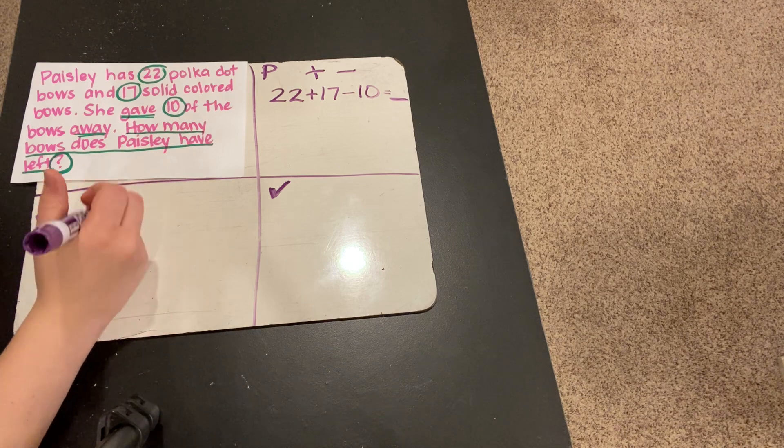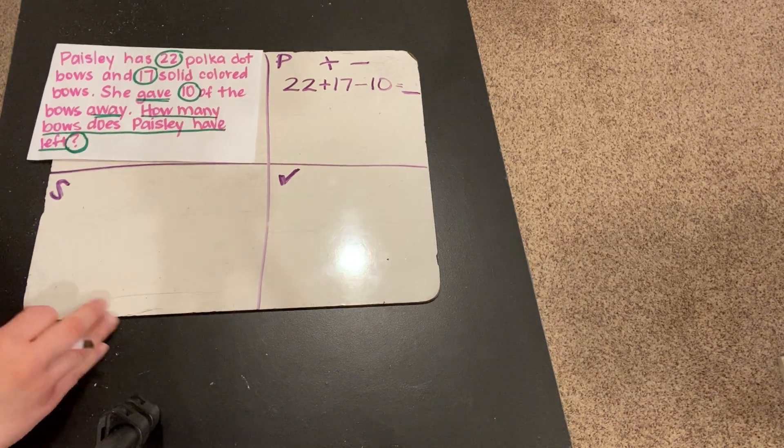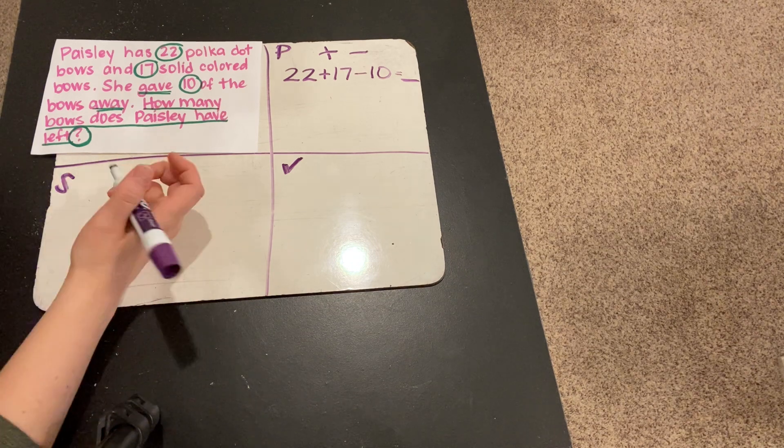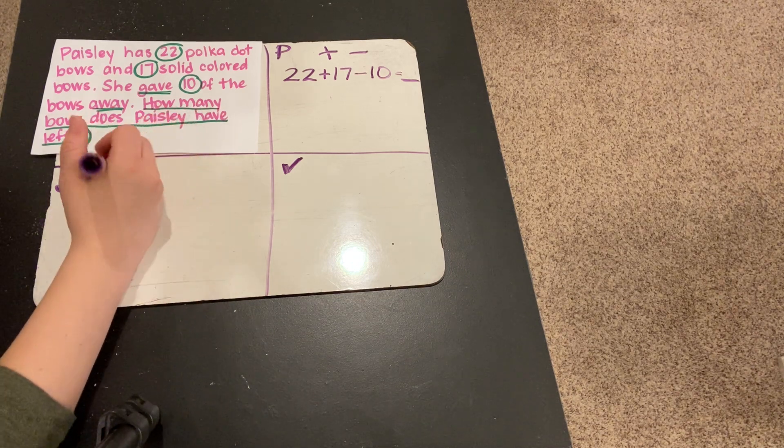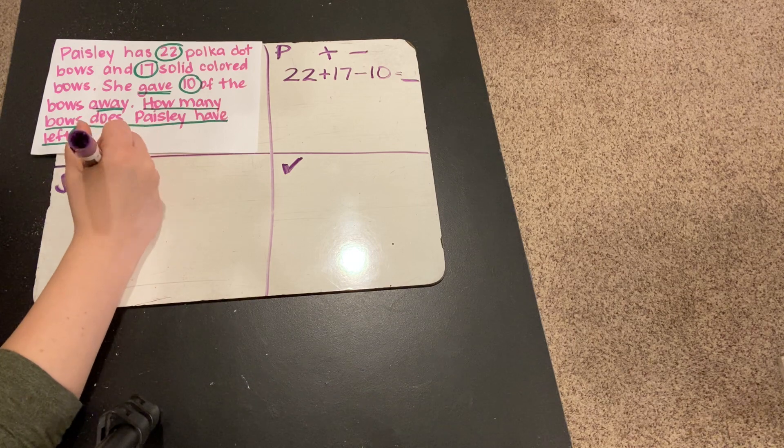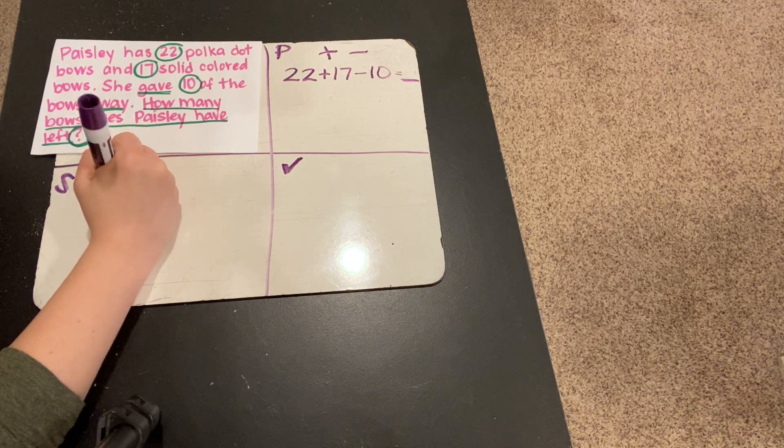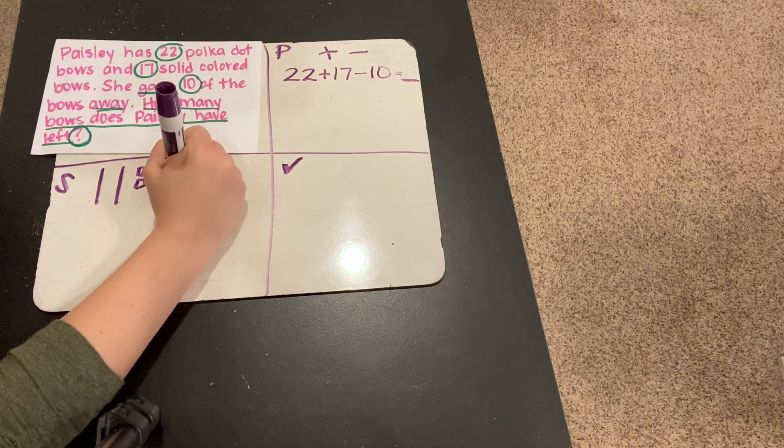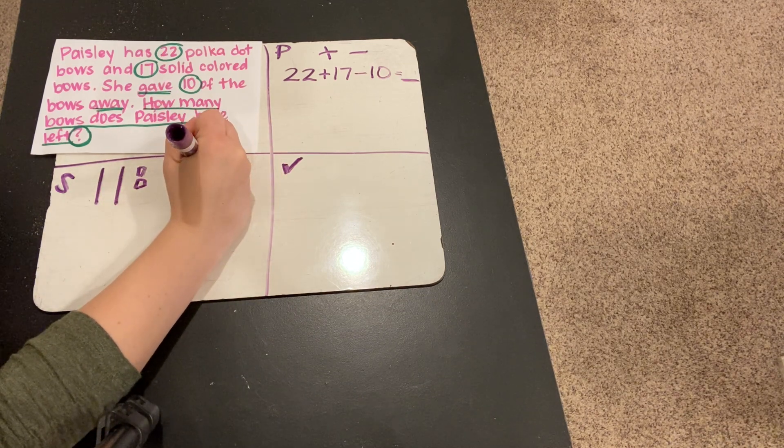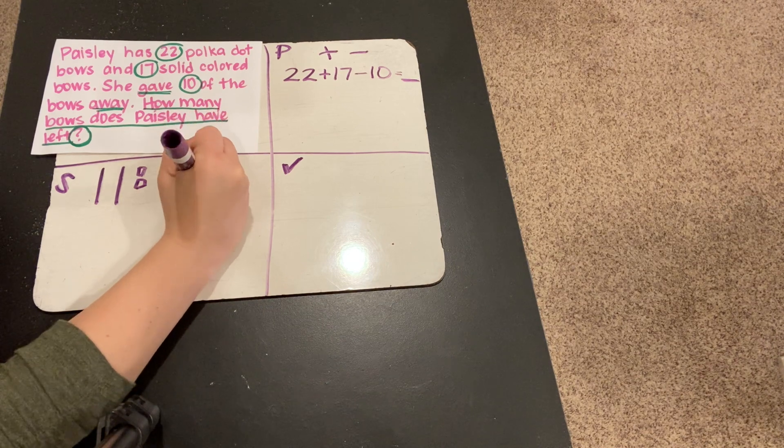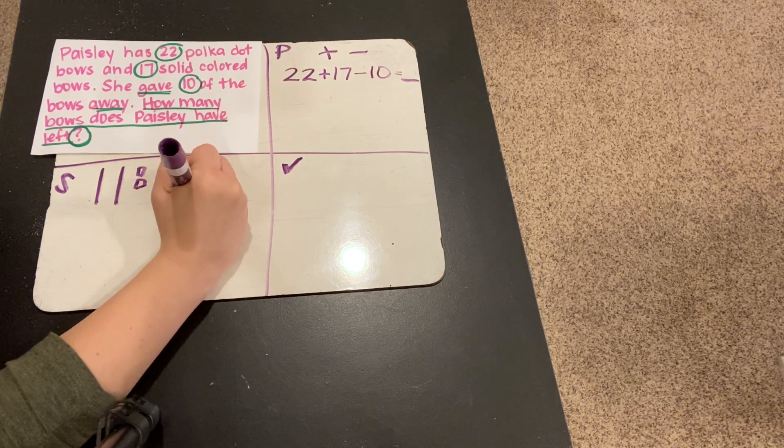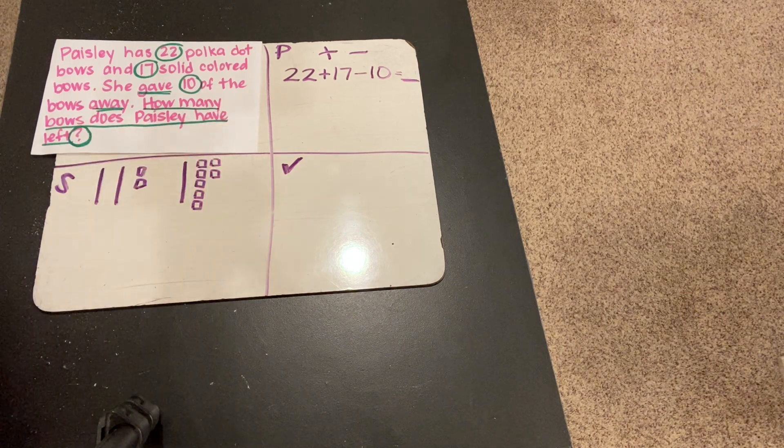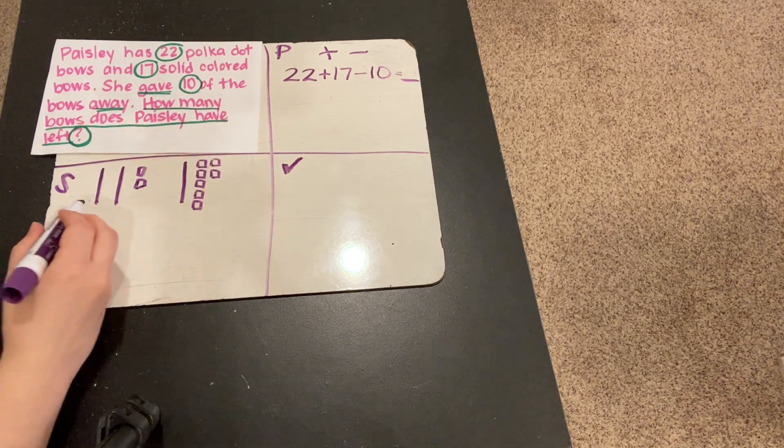Okay, let's come down here. Since we've been doing base 10 blocks so much this week, I'm going to draw a base 10 block model to help us solve. So, 22 plus 17 is what I'm looking to solve first. So, let me draw my 22, 10, 20, 21, 22, and then my 17, 10, 11, 12, 13, 14, 15, 16, 17. All right, let's add these together.